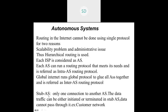Coming to the types of autonomous systems: the first is a stub autonomous system, which has only one connection to another AS. Data traffic can be either initiated or terminated in a stub, but data cannot pass through it. For example, a customer network connects to one other AS — you can initiate or terminate data transfers, but data cannot pass through the end network.